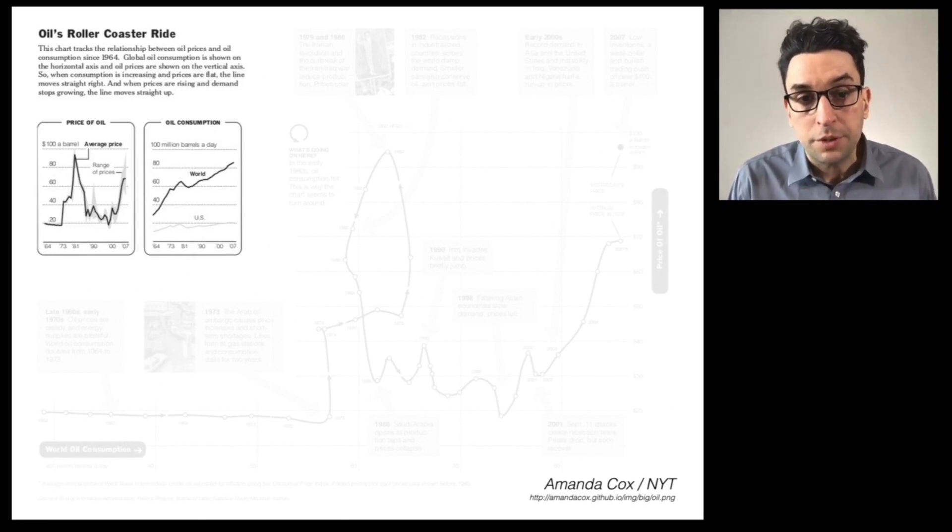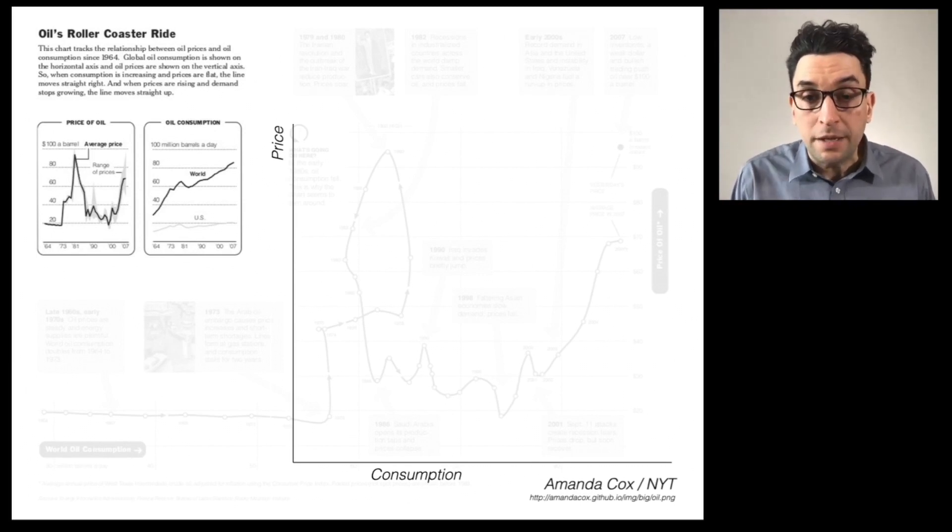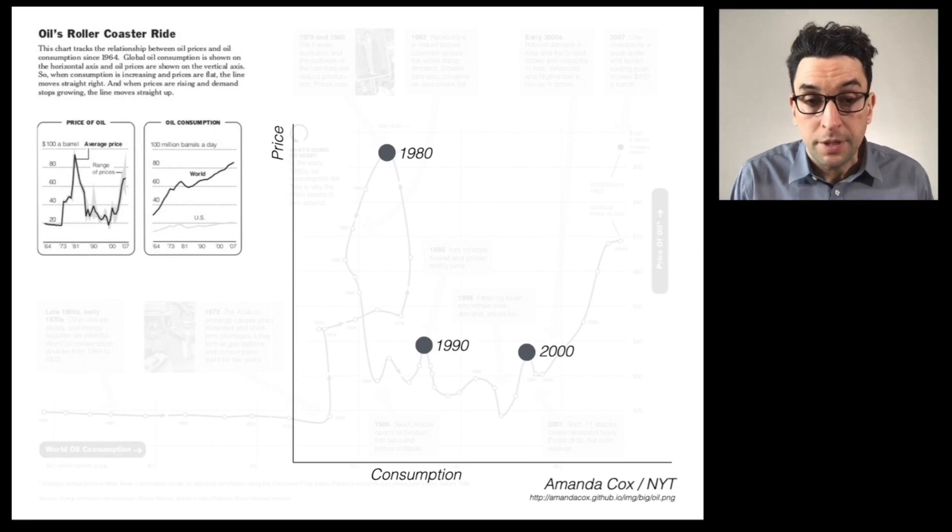In order to do this, we're going to convert these data into a scatterplot. Note that for the year 1980, there's both a price and a consumption level for oil, so we could plot that dot here. And we could plot the same dot for 1990 and for 2000. Now it's easier to see the relationships between these points. Look at 1980, price was high but consumption was low. Look at 2000, consumption was high but price was low.